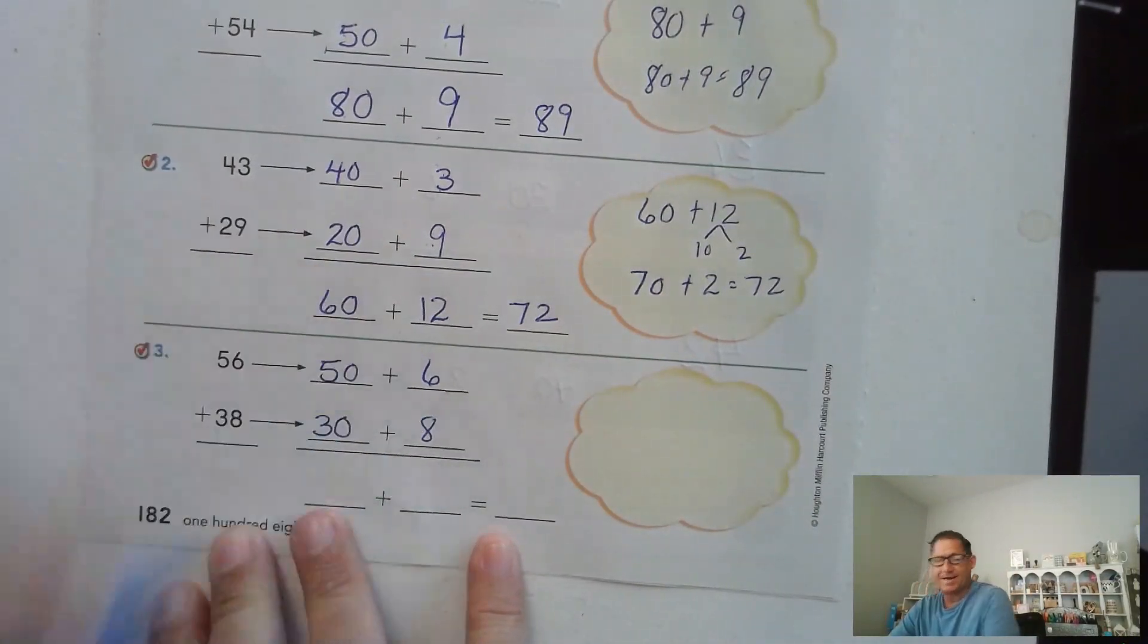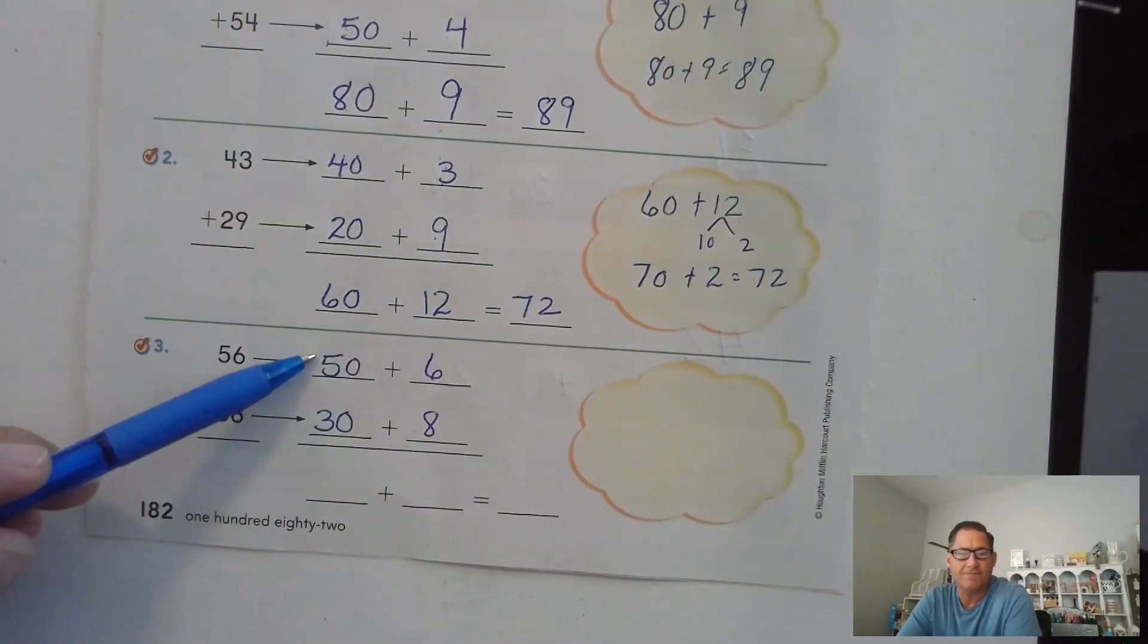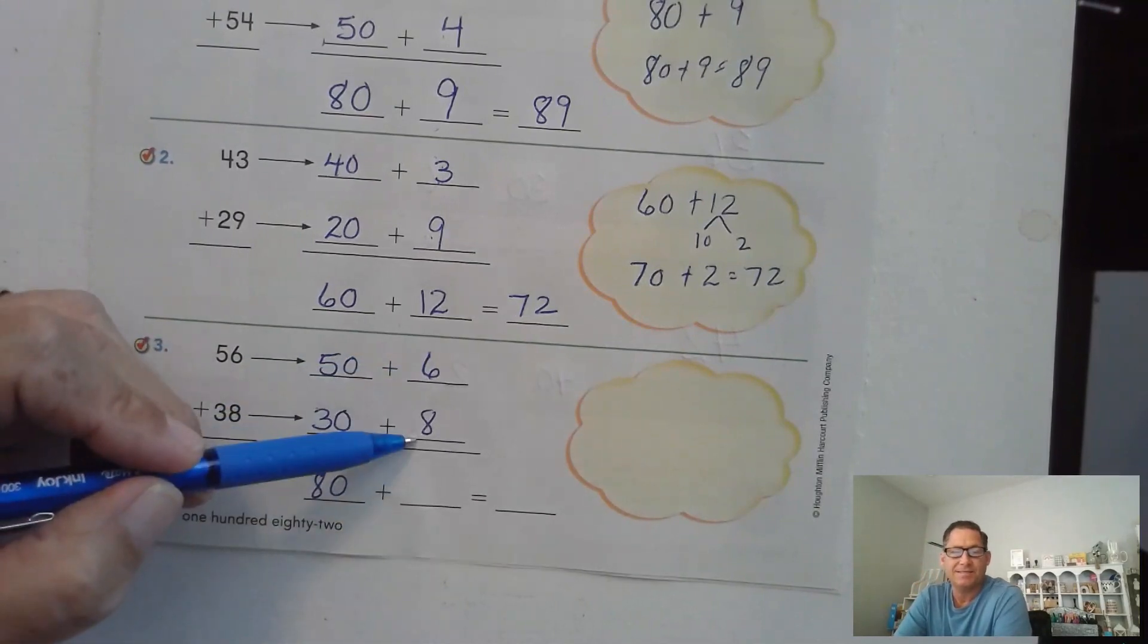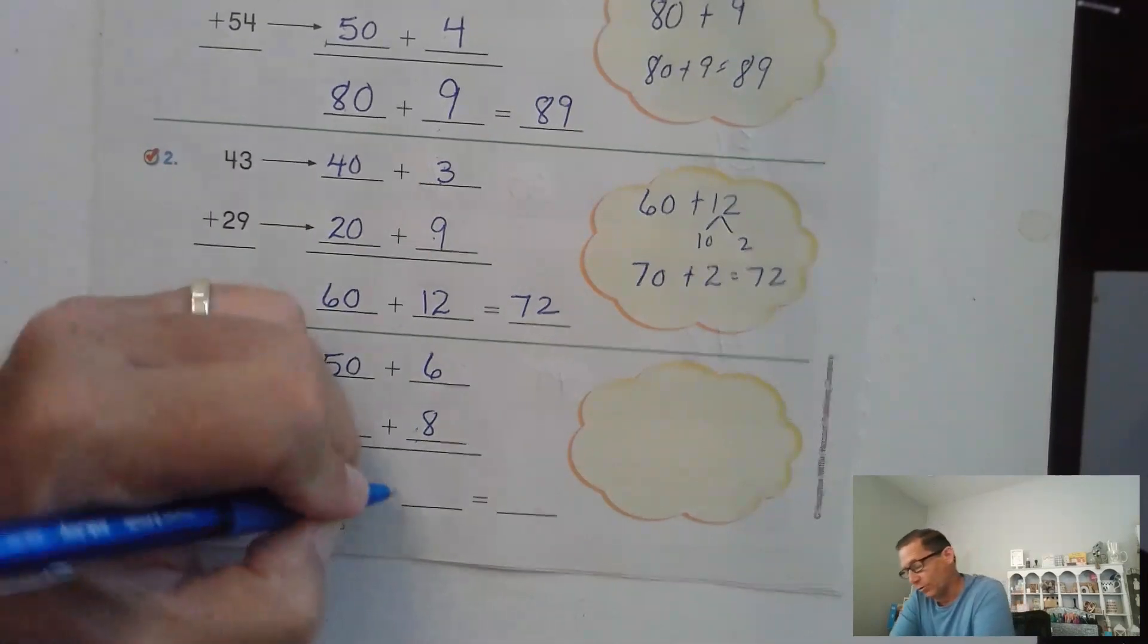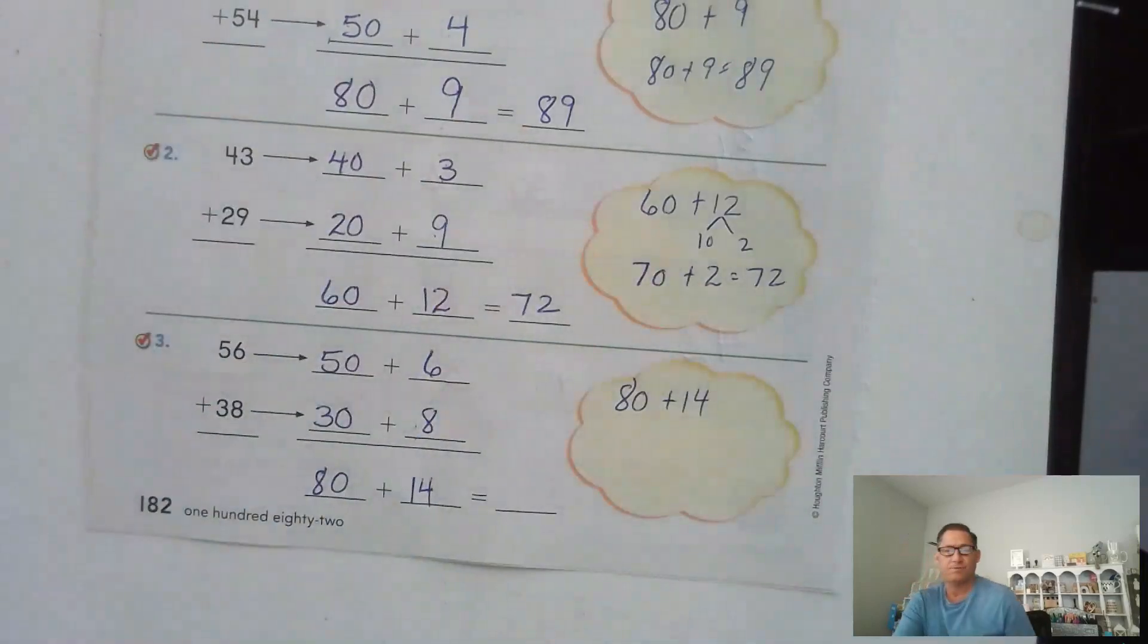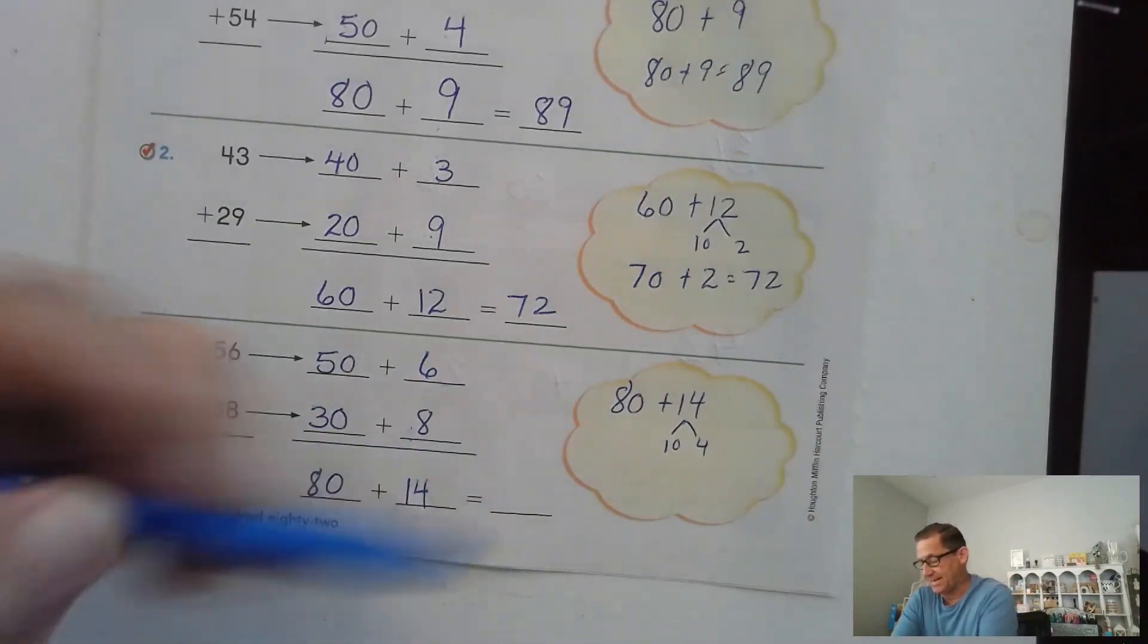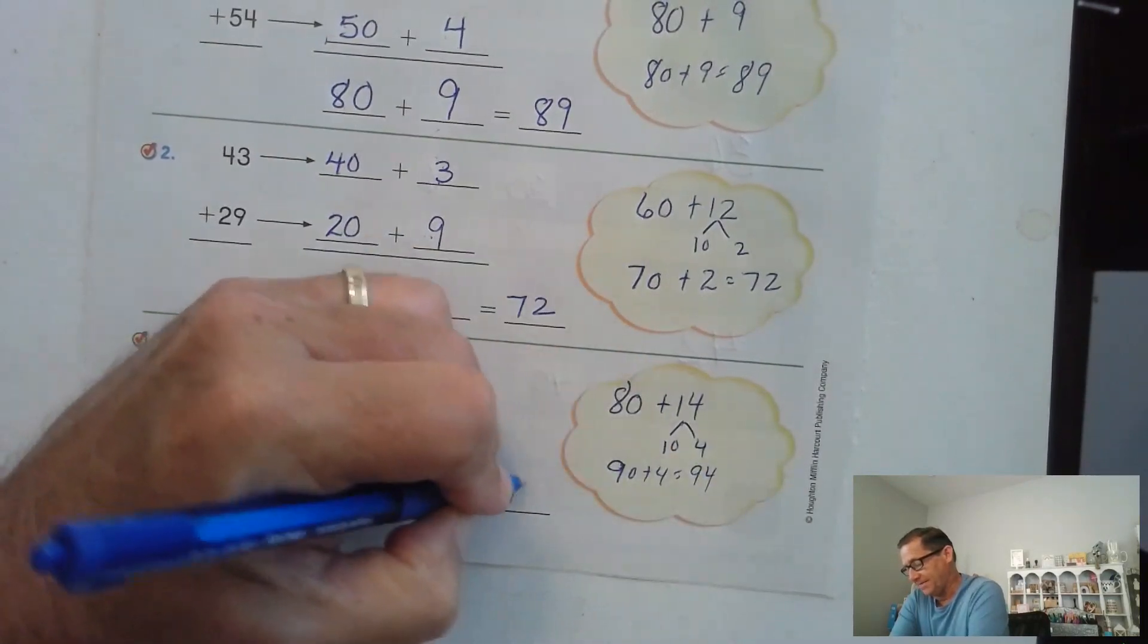56 is 50 and 6 more. 38, 30 and 8 ones. For the sum of the tens, we have 5 tens, 3 tens. 5 tens and 3 tens is 8 tens, or 80. And 6 plus 8, well 6 plus 6 is 12, plus 2 more is 14. So we can think of that as 80 plus 10 plus 4. 80 plus 10 is 90, and 4 more is simply 94.